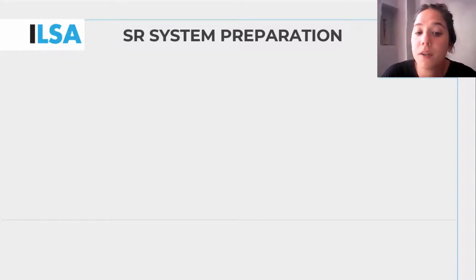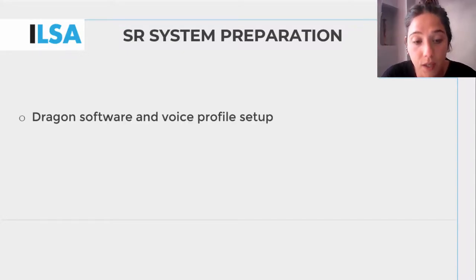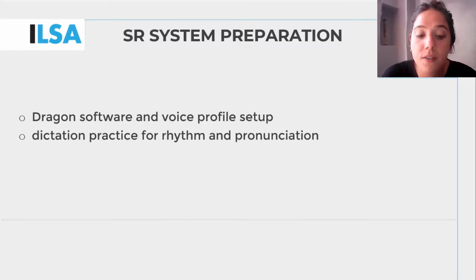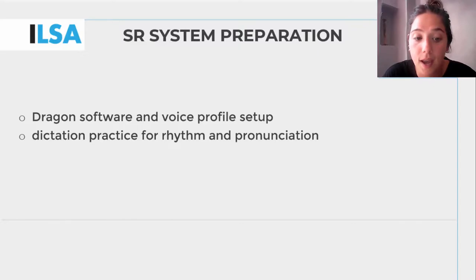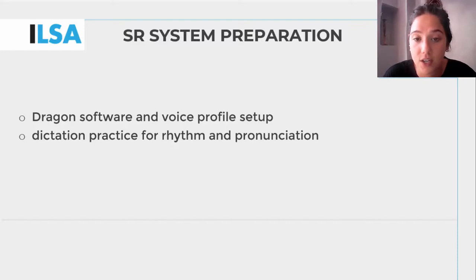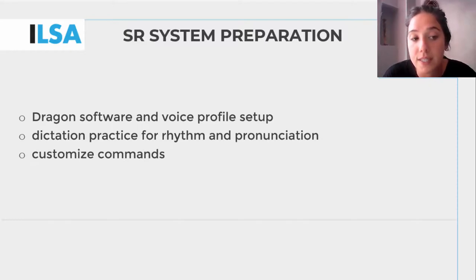First of all, the respeaker — who has full knowledge of the entire respeaking process and the speech-to-text system — needs to set up the Dragon software voice profile. To do so, the respeaker needs to carry out a dictation practice to adjust rhythm and pronunciation in order for the software to recognize the words that will be spoken, as explained in previous modules 2A, Unit 2, Speech Recognition and Dictation. Furthermore, commands can be customized according to the respeaker's preferences and needs.